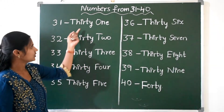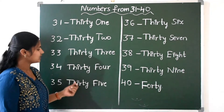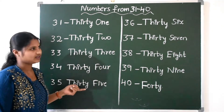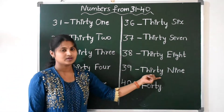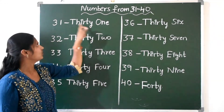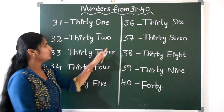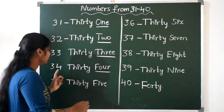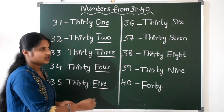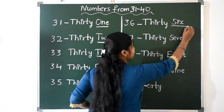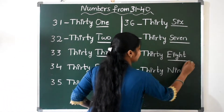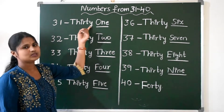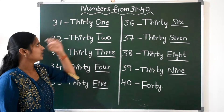Okay, if you observe, in all the number names the same spelling THIRTY appears. And then we add ONE, TWO, THREE, FOUR, FIVE — all numbers we already know. So you just need to learn the spelling of THIRTY, and the rest you already know.